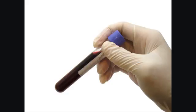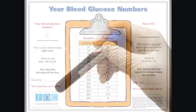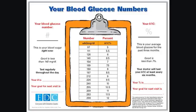When your doctor requests blood work that includes an A1c, there are people in the lab that actually count the number of sugar molecules on each of your red blood cells. The higher your A1c, the more sugar molecules there are on your red blood cell. If you would like a quick look and an easy way to keep better track of your A1c and blood sugars, take a look at this chart.